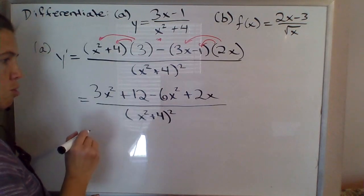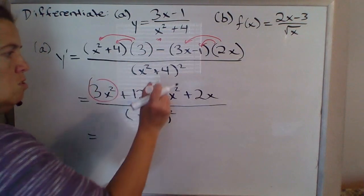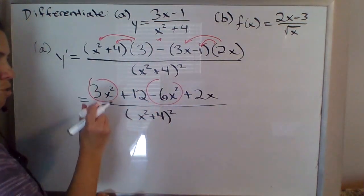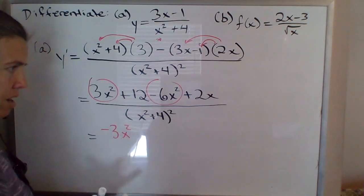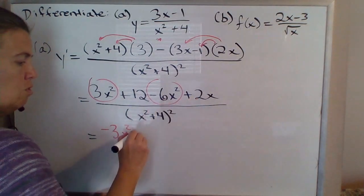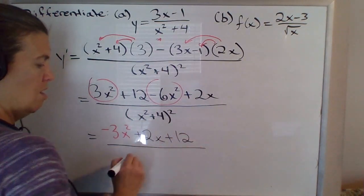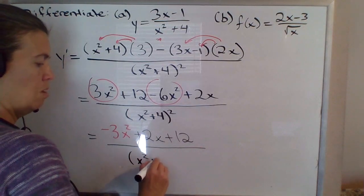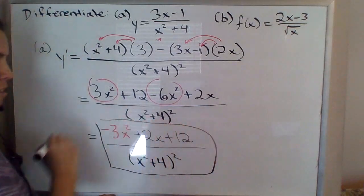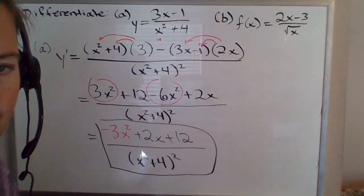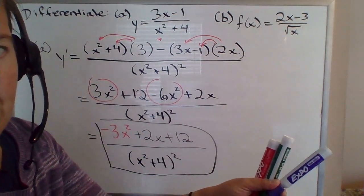Now combine like terms. We can combine the squared terms: 3 minus 6 gives us negative 3x squared. And that's all the combining we can do — then we have just the one term with x to the first and the one constant term in the numerator, all divided by x squared plus 4, squared. So this will be our final answer to part a.